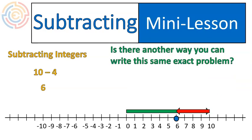Is there another way that we can write this same exact problem, other than 10 minus 4? Think about that for a second. Remember everything we've talked about, especially the stuff we talked about adding at the beginning. What do you think? Did you come up with adding a negative? This could be written as 10 plus negative 4. On the number line, it would look like this. 10 plus negative 4. Does that look familiar? Because it is. It's exactly the same problem.